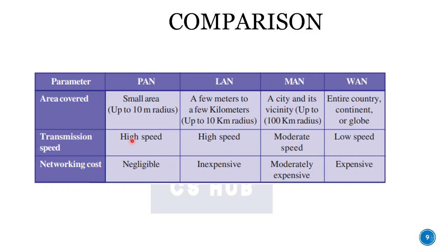In terms of transmission speed: PAN is high speed, LAN is high speed, and MAN is comparatively high speed. For networking cost: PAN is negligible — if you just have Bluetooth or a single printer connected to a computer, there is almost no cost. LAN is not very expensive. MAN is moderately expensive. But to set up a WAN, it is highly expensive.